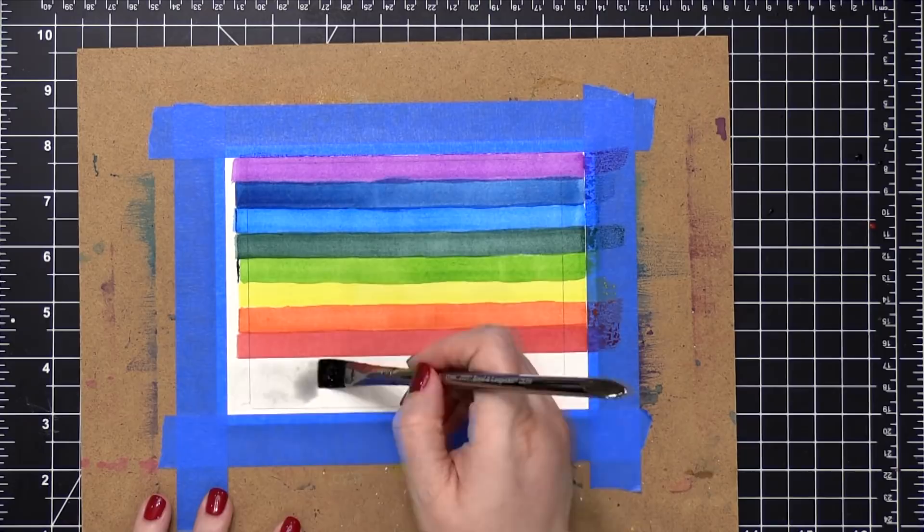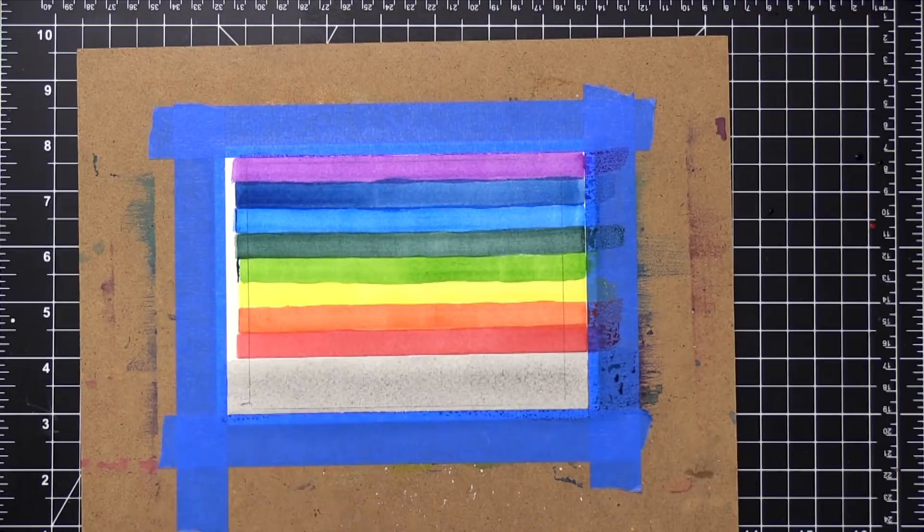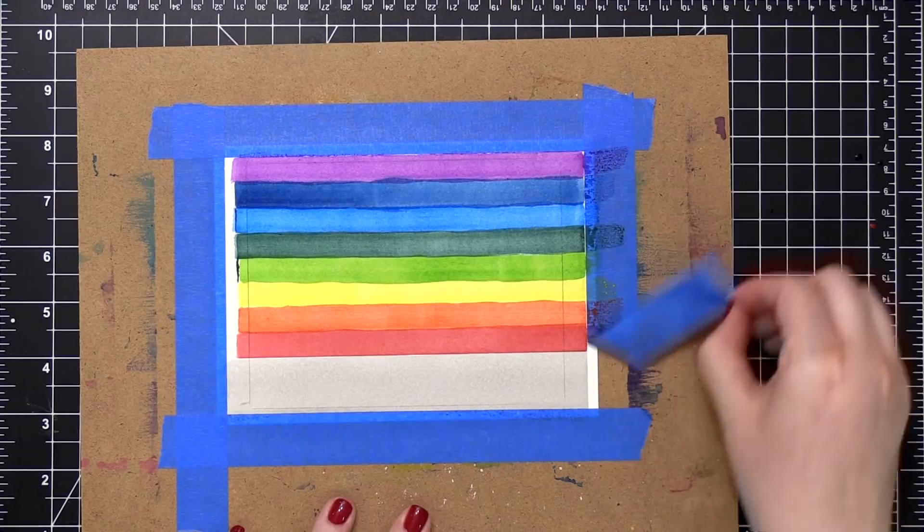So here's that bottom area. I'm doing a really faint, watered down wash of a really light gray. I used the black from the palette and just watered it down a ton. After it was all dry, I removed it from the hardboard.